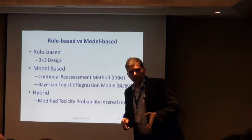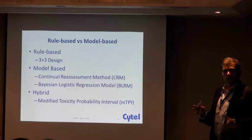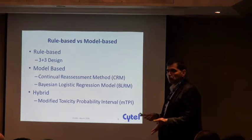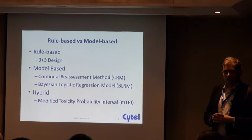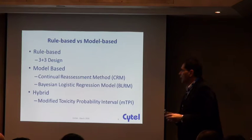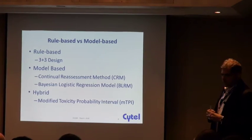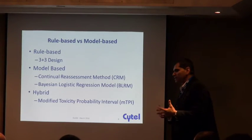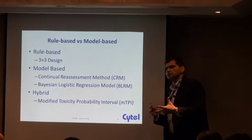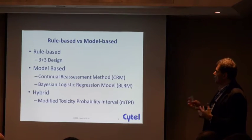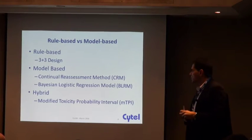The methods being used are categorized as rule-based methods, like the 3+3 design or different up-and-down designs, and model-based methods like the continual reassessment method and Bayesian logistic regression model. There has also been a hybrid methodology which uses the merits of a rule-based design — being easy for clinicians to implement and understand — while also utilizing Bayesian approaches to model the probabilities of toxicities at each dose level.